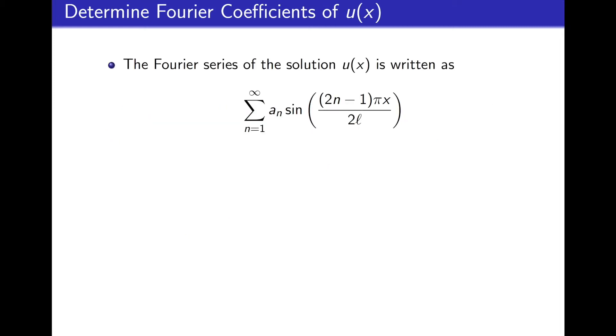Next, we write out the unknown solution as a Fourier series. Here we have unknown coefficients a sub n and our goal is to find what the value of all the a sub n coefficients is. Note that we have written out u(x) as a Fourier series using the eigenfunctions themselves rather than for instance the sine n pi x over l that we had for the Dirichlet problem.